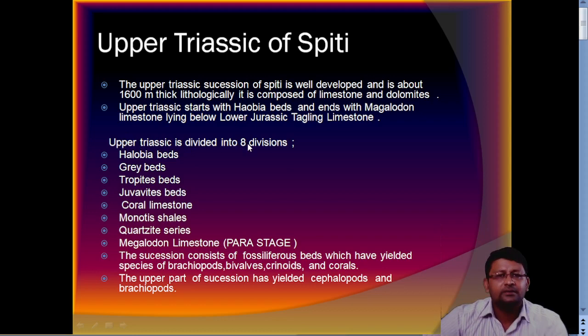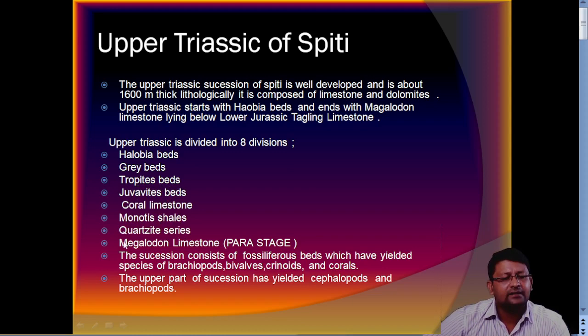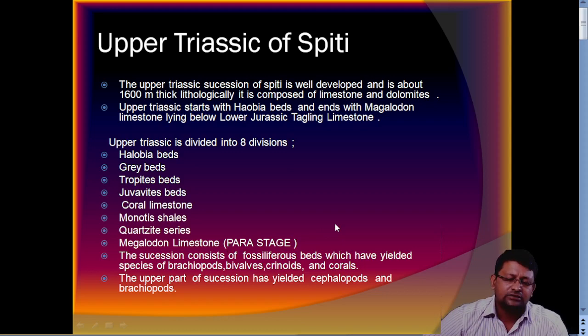The upper Triassic is divided into eight divisions: Halobia beds, grey beds, tropoid beds, Juvavite beds, coral limestone, Monotis shale, ore series, and finally Megalodon limestone, which is on the para-stage. The upper part also has irradiated cephalopods and brachiopods.